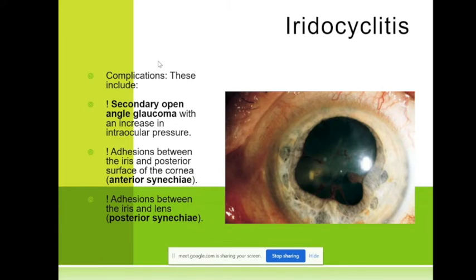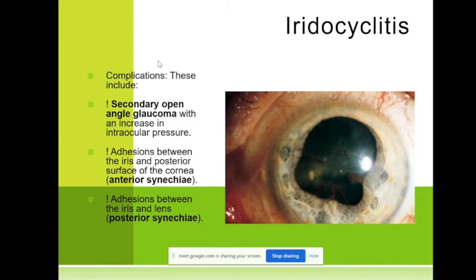In ankylosing spondylitis there are patients who know this problem — they have had iridocyclitis 1, 2, 3, 5 times. I have patients who come in bringing dexamethasone for injection, knowing something is wrong. This problem can come in any age but in women after 50 during menopause it is very common.